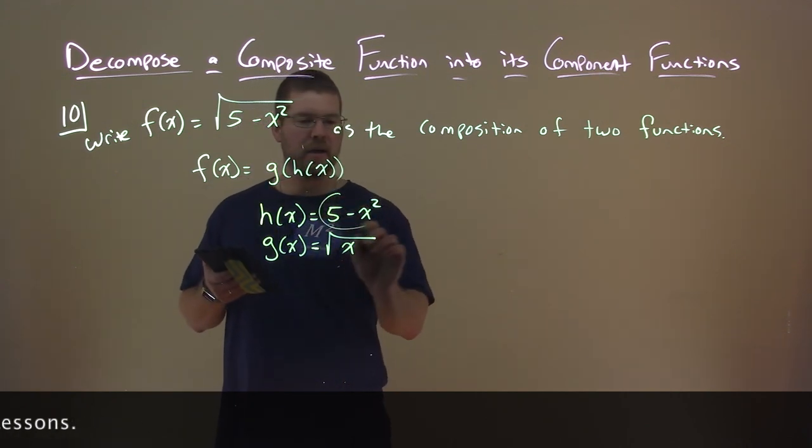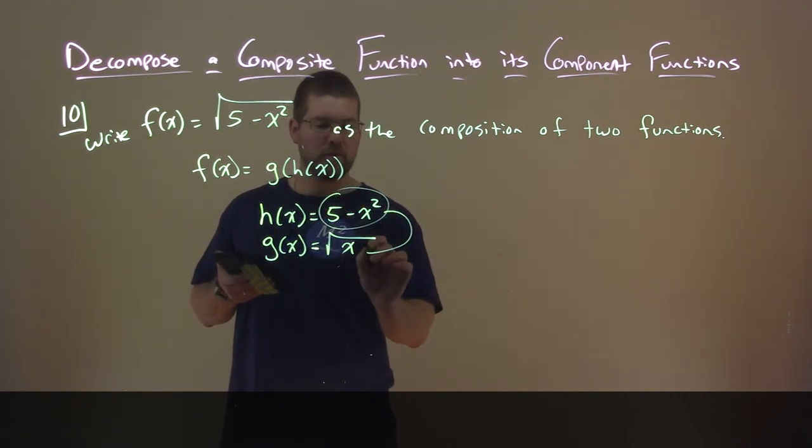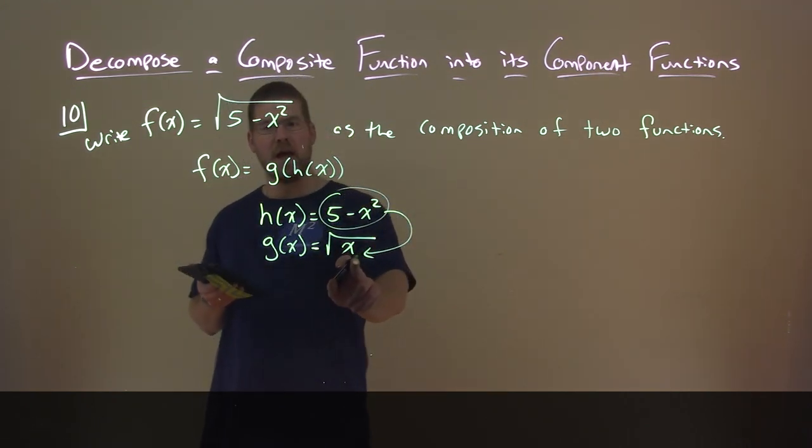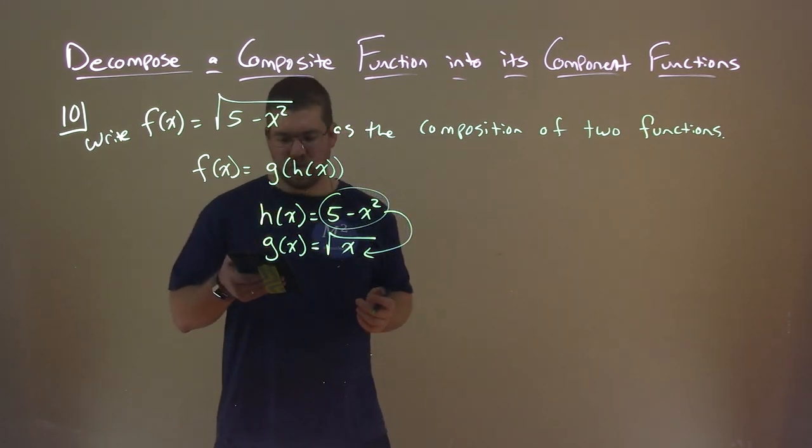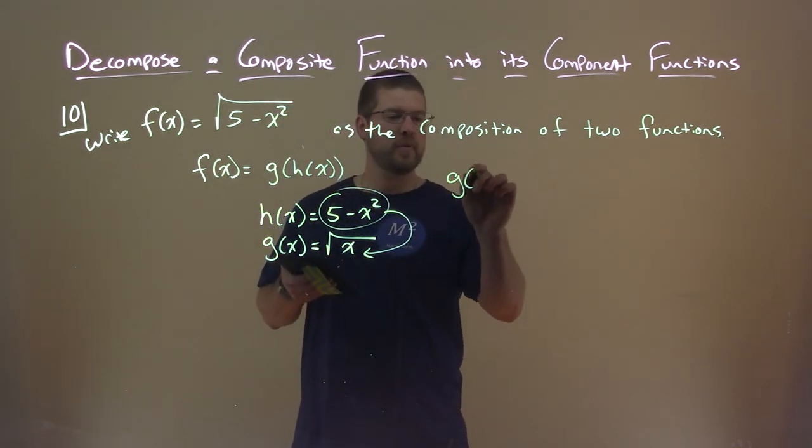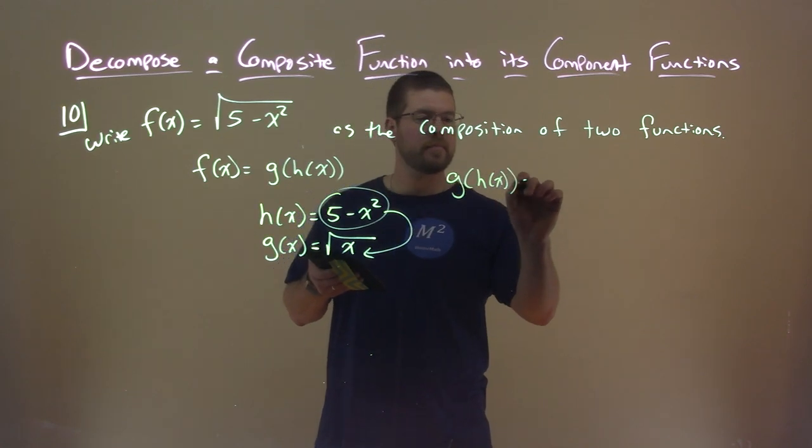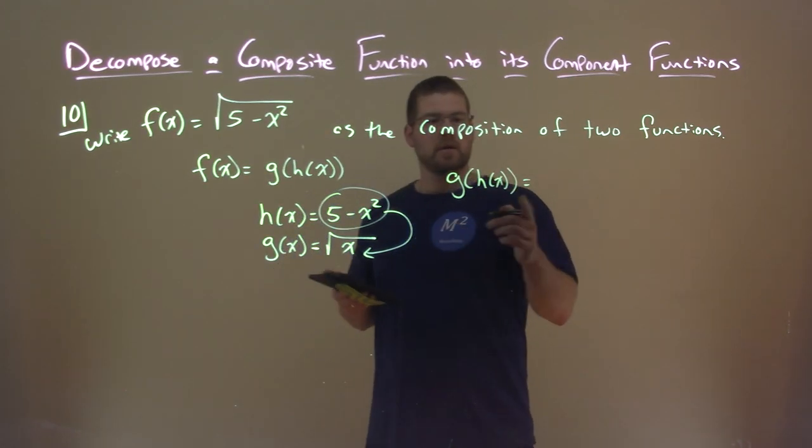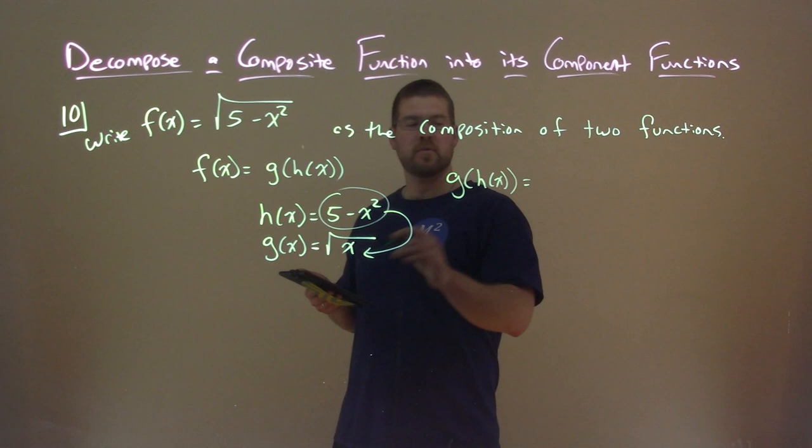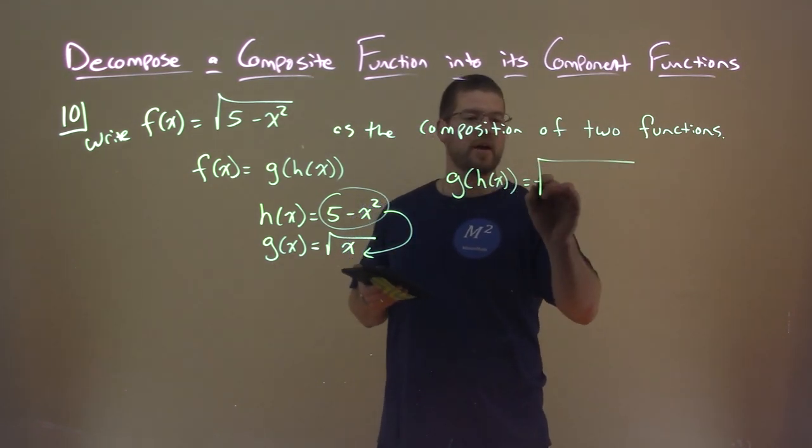And so what that kind of shows is, remember this h of x is going to plug in here for that x and we will get f of x. So we can check that to see if we did it right. g of h of x is, well what's g of x? g of x we said is the square root of whatever h of x is.